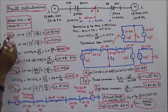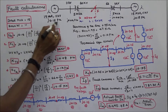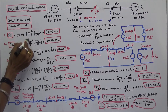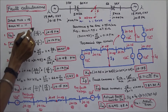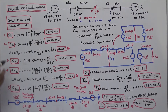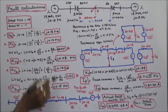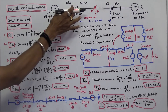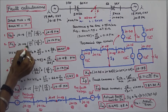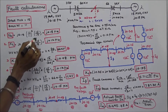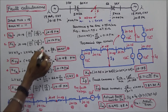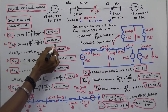For Generator 1, the given reactance value is J.15. Applying (11/11)² × (15/15), that is equal to J.15 per unit. For Transformer 1, the given value is J.04 × (11/11)² × (15/5), that is equal to J.12 per unit.